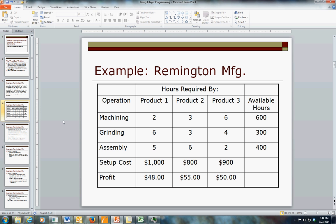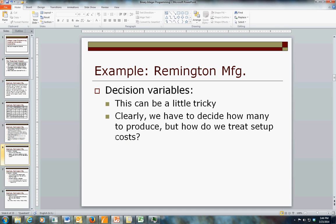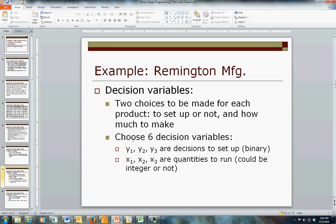The way we're going to deal with it is to introduce another set of decision variables. We have the conventional ones of how many units of each product to produce, but the setup cost will be attached to another set of decision variables, one of which will be binary, and tells us whether or not to pay the setup charge. We're going to have six decision variables in this problem, three x variables which are the quantities to produce, and three y variables which are the decisions to pay the setup cost or not.